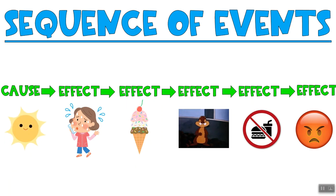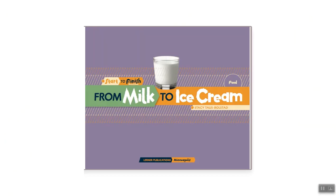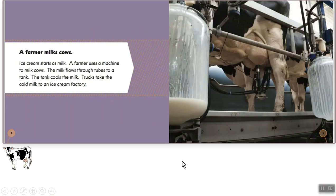So today we're gonna be looking at a sequence of events in a nonfiction title called from milk to ice cream. At the bottom of our screen before we start you're gonna see each page will have a little picture so that you can see our sequence of events come to life. Farmer milks cows. Ice cream starts as milk. A farmer uses a machine to milk cows. The milk flows through tubes to a tank. The tank cools the milk and trucks take the cold milk to an ice cream factory.